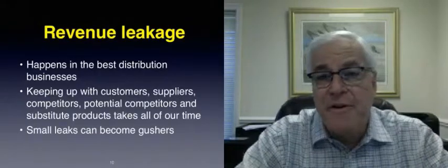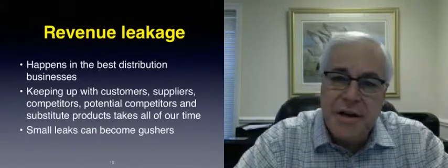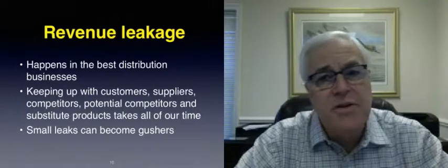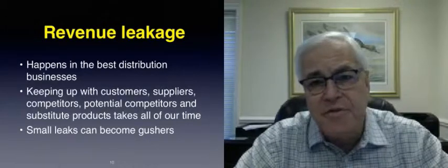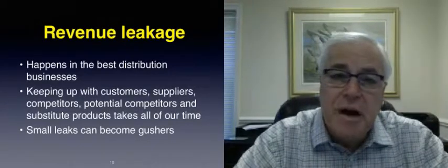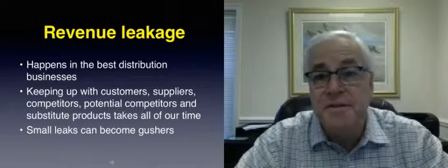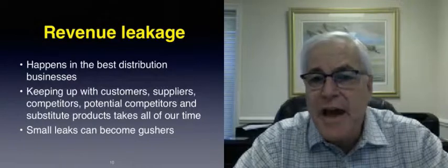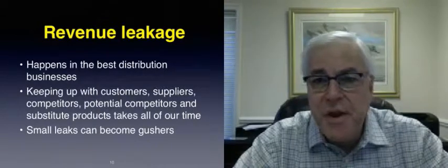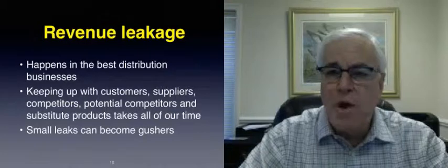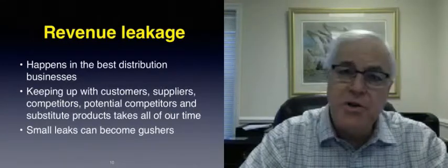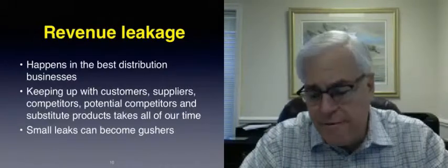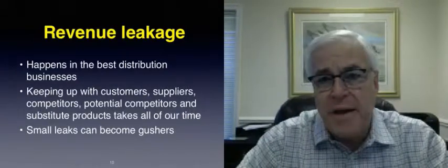To wrap it up for this week on revenue leakage: it happens in the best companies and even the best-managed wholesale distribution businesses. We have so much to do keeping track of our customers, suppliers, competitors, potential competitors, and substitute products that it takes up all of our time — and we allow these little leaks to happen until they become gushers. Next week we're going to talk about another revenue leakage opportunity and what you can do about it. This is Brent Grover from Evergreen Consulting for Advanced Supply Chain Software powered by IBIS.